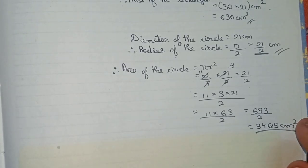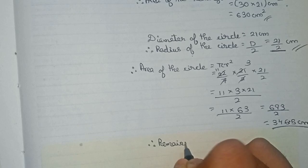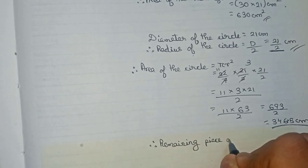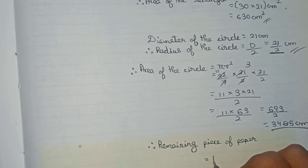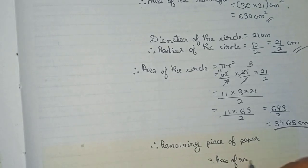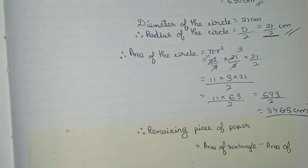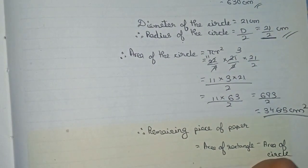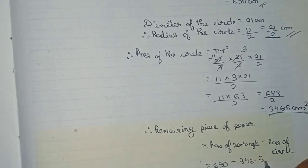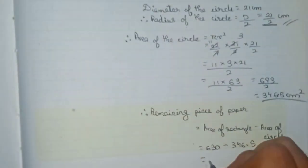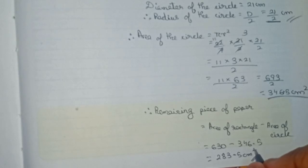Now our last task is to find the remaining piece of paper. The remaining piece of paper equals area of rectangle minus area of circle, which is 630 minus 346.5, giving us 283.5 centimeters squared. So 283.5 cm² is the remaining piece of paper — this is the final answer.